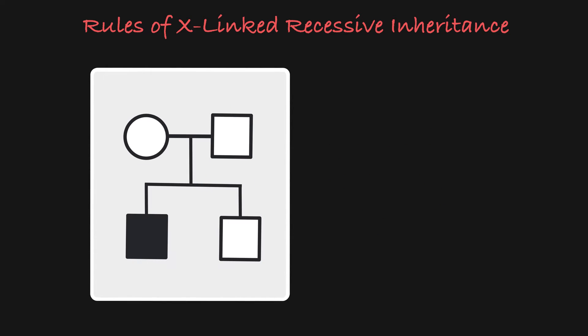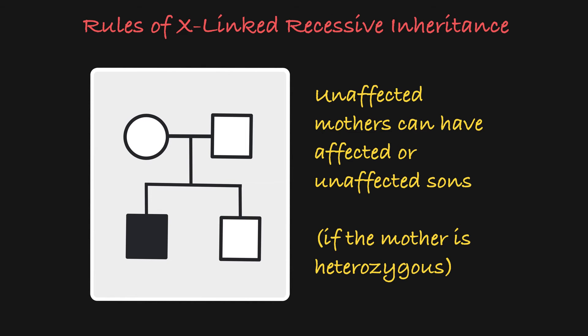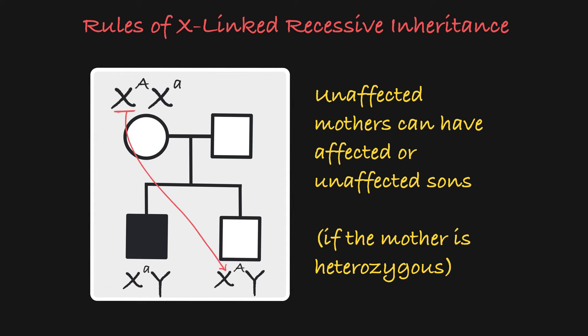Finally, you may see an unaffected mother having affected sons if she is heterozygous. That's because she will pass on either her recessive or her dominant X-allele to her son, dictating whether or not he exhibits the trait.